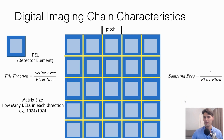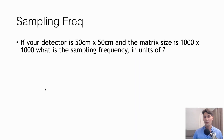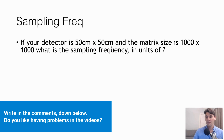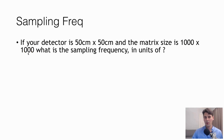We'll go through a couple of sample problems related to these definitions to make them clear. For the sampling frequency example: if our detector is 50 centimeters by 50 centimeters — a pretty large detector — and the matrix size is 1000 by 1000, what is the sampling frequency? Sampling frequency is just one over the pixel pitch, so we first need to figure out what that pixel pitch is.